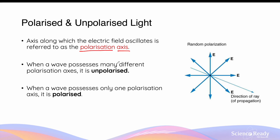The axis along which the electric field is oscillating is referred to as its polarisation or polarising axis. When a wave possesses many different axes of polarisation — that is, when it has electric fields that oscillate in different directions — it is referred to as an unpolarised wave. In contrast, when a wave consists of only a single axis of polarisation, it is said to be polarised.